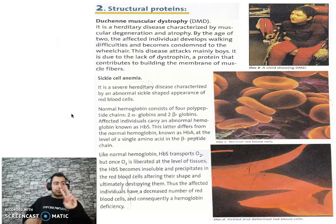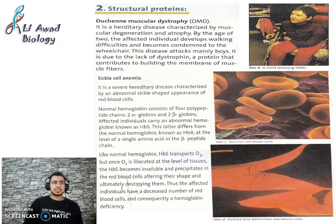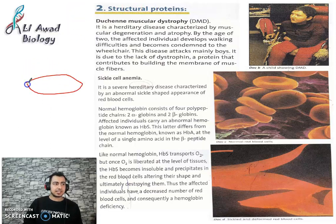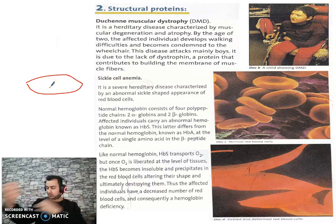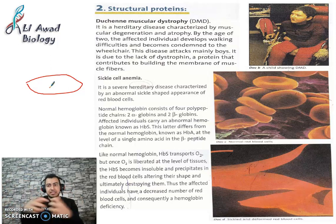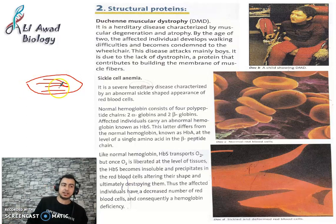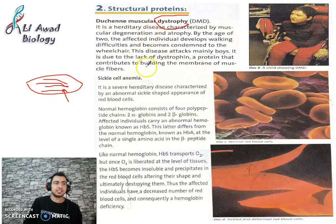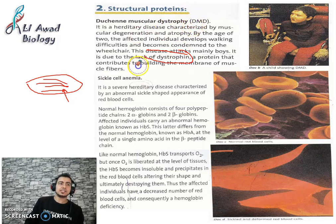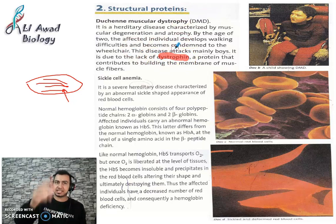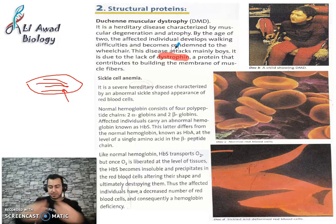Now we are going to talk about structural proteins. The first disease is Duchenne muscular dystrophy (DMD). Inside your muscle cells, you have muscle fibers that contain a protein called dystrophin. This protein is necessary for building up muscles. Without this protein, muscles degenerate.